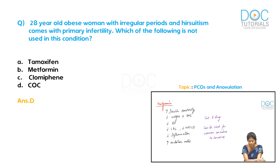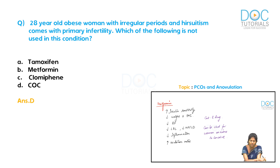Metformin increases insulin sensitivity, decreases weight and BMI, decreases blood pressure, decreases LDL, decreases non-alcoholic fatty liver disease, decreases inflammation, and increases ovulation rates. However, metformin is not a drug for ovulation induction and not a drug for weight loss. It is a category B drug and can be used for women anxious to conceive, but should not be used routinely during pregnancy unless there is impaired glucose tolerance.